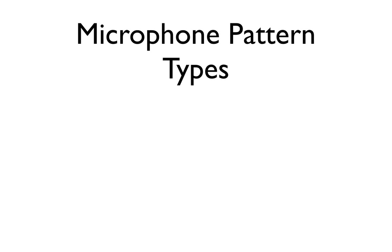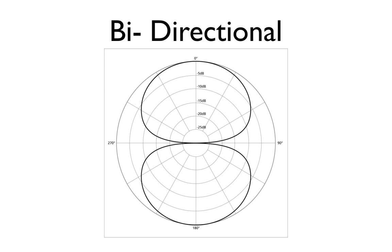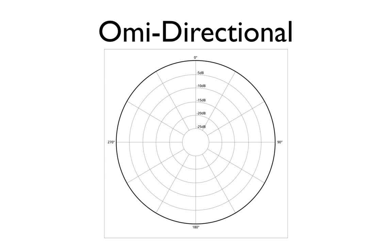Let's go ahead and cover microphone pattern types. There are actually a few different microphone pattern types out there. Let's go over the three most common ones. The first is unidirectional — a pattern type that will pick up sound only in one direction, and it's really good for recording single voices. The next pattern type is bi-directional, which picks up sound from two places and is really great for recording two voices at the same time. The last pattern type is called omnidirectional, which picks up sound in all directions.